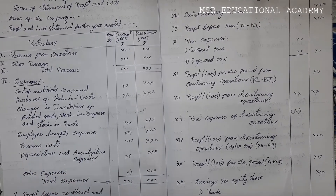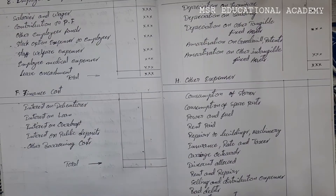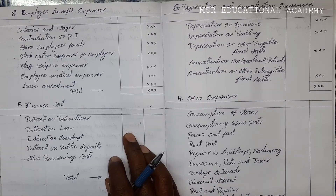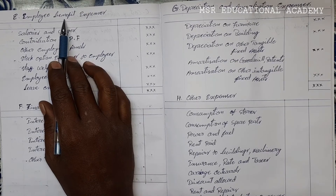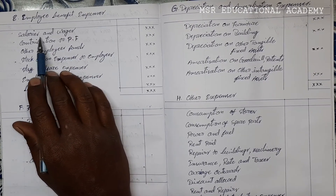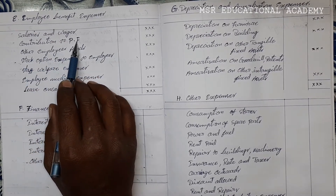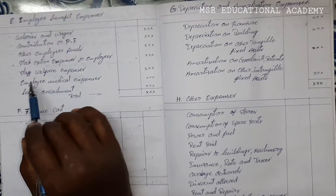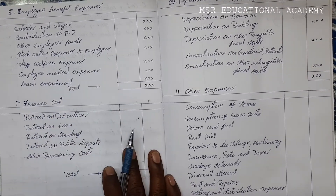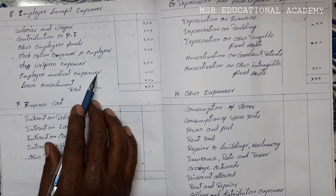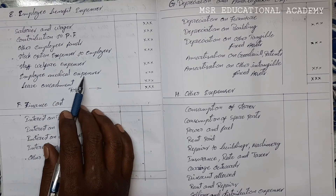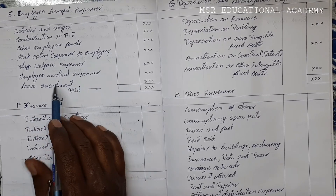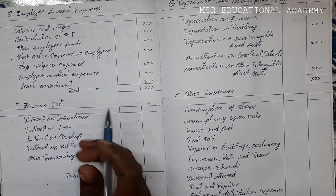Next expenditure is employee benefit expenses — that is expenditure related to employees. Whatever amount is paid to employees, those expenditures come under employee benefit expenses. It is benefit to the employee, but not to the organization — please remember. Under this: salaries and wages, contribution to PF, other employee funds, stock option expenses to employees, staff welfare expenses, employee medical expenses paid by the organization, and leave encashment — all come to employee benefit expenses.